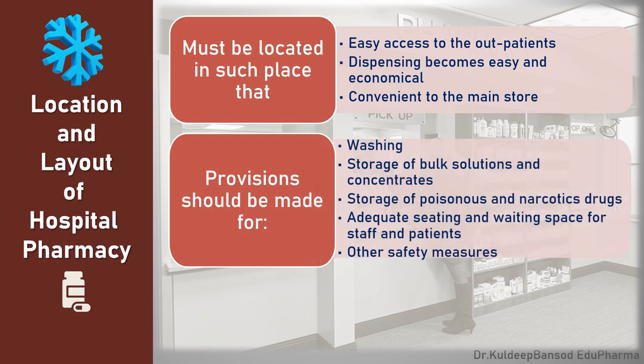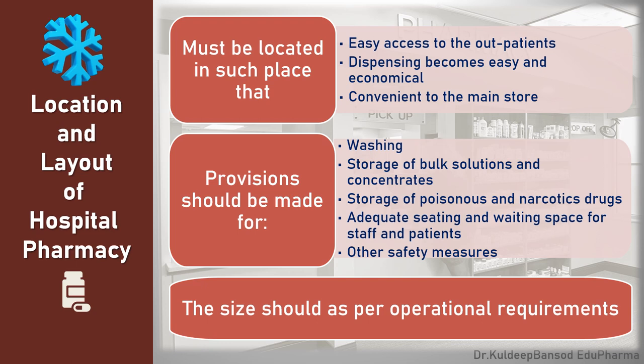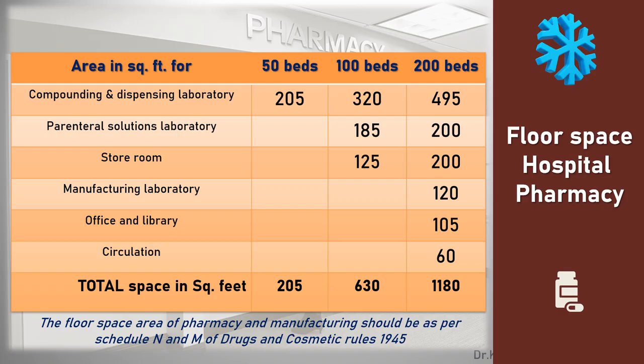There should be provisions for washing, storage of bulk solution and concentrates, storage of poisonous and narcotic drugs, adequate sitting and waiting space for staff and patients, and all safety measures should be imparted. The size is as per the operations carried out inside it. This chart shows the floor space requirement in square feet — as the number of beds increases, the compounding and dispensing laboratory requirement goes on increasing.